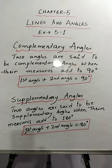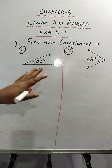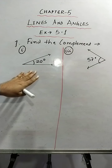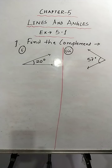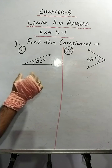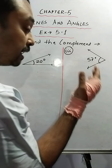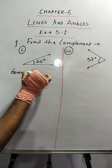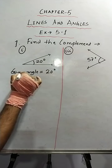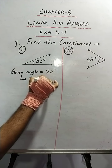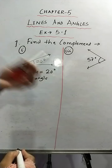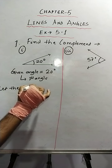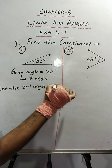There are three sums but I will explain the first and the last one of question number one. In question number one they have asked to find the complement of the given angles. The given angle is 20 degrees. We'll consider this as the first angle, and since we are unknown to the second angle, we'll let that second angle be x.